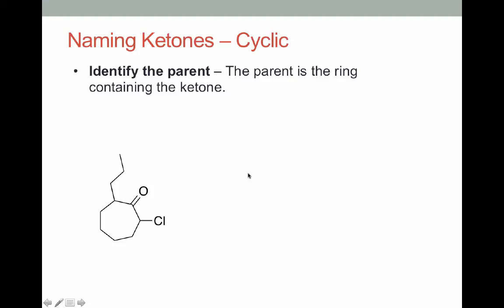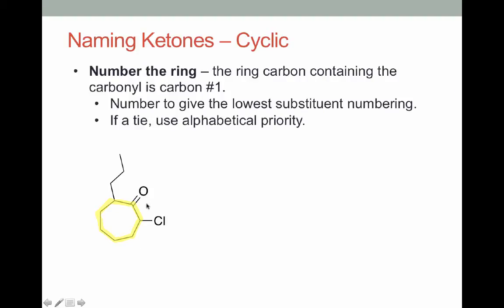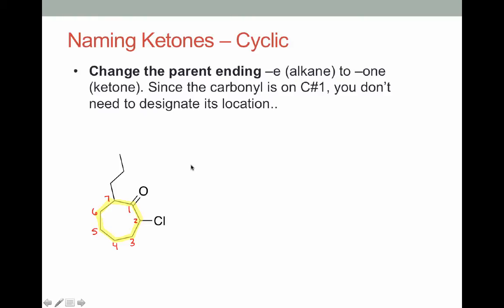So in this example, the first thing we want to do is identify our parent. And our parent is this 7-membered ring containing the ketone. So we can highlight that. Next thing we want to do is number the ring. And to start, we'll pick the ketone carbon as 1, and we can number clockwise or counterclockwise. Well, if we number clockwise, we'll get a substituent at 2 and 7. If we number counterclockwise, we'll get a substituent at 2 and 7. So we can't make a decision based on substituent numbering. So now we'll switch to alphabetical priority. And C, chloro, comes before P, propyl. So we'll make chloro carbon 2. Okay, now we have our numbering down.